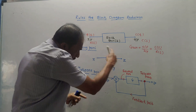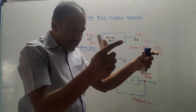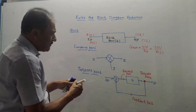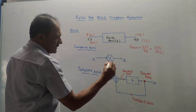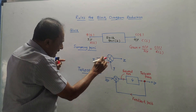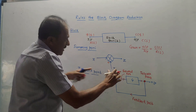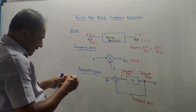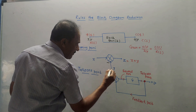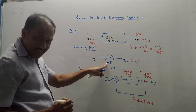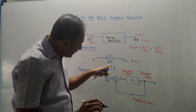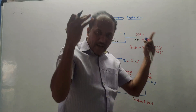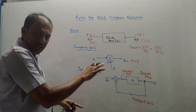Next is the summing point. As the name indicates, this block represents summation or addition of two signals. If two inputs x and y are given with no sign shown, by default consider the plus sign, so output z = x + y. If a minus sign is mentioned for one input, then it becomes x - y. So a summing point performs either addition or subtraction depending on the signs given for the inputs.